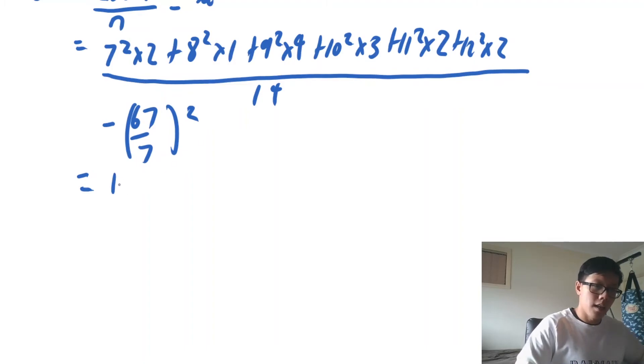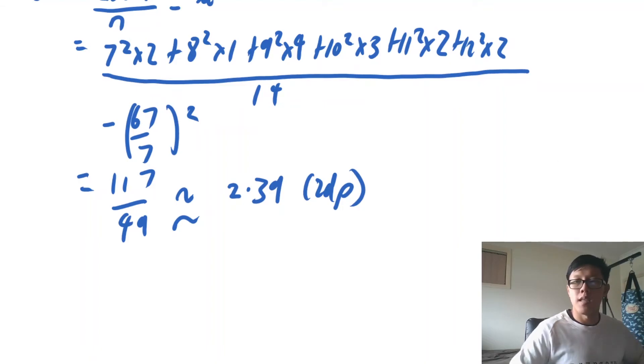And I get 117 on 49 which is approximately 2.39 rounded to 2 decimal places.